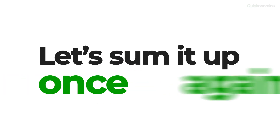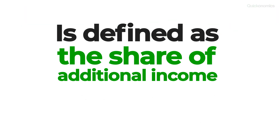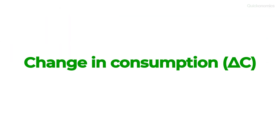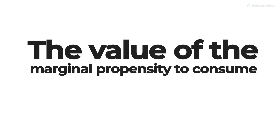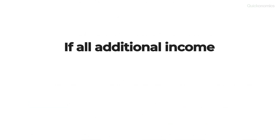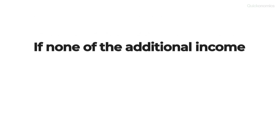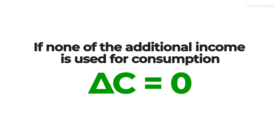And that's it. Let's sum it up once again. Marginal propensity to consume is defined as the share of additional income that a consumer spends on consumption. It can be calculated as delta C divided by delta Y. The value of the marginal propensity to consume can range from 0 to 1. If all additional income is used for consumption, delta Y equals delta C, resulting in a value of 1. If none of the additional income is used for consumption, delta C is 0, resulting in a marginal propensity to consume of 0.